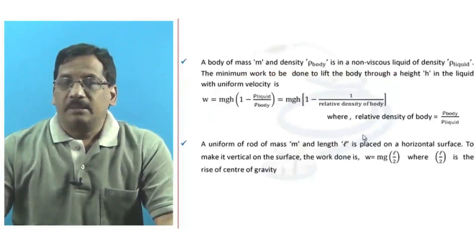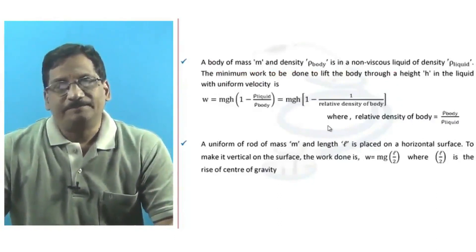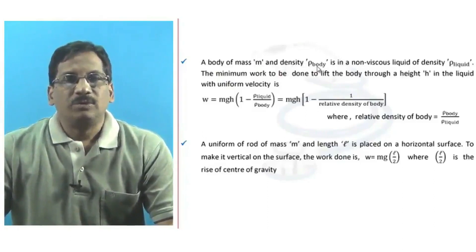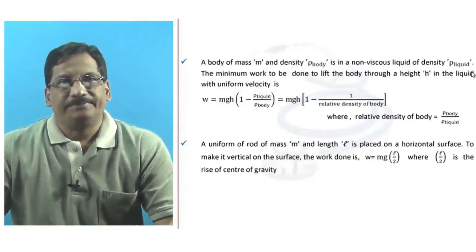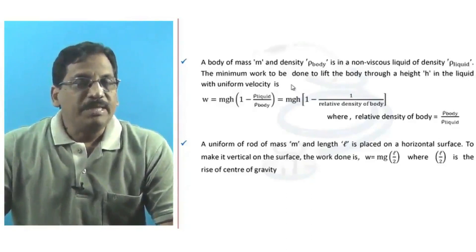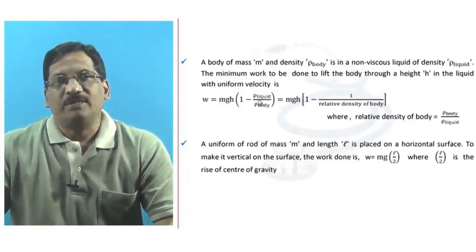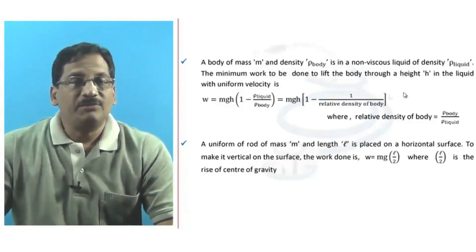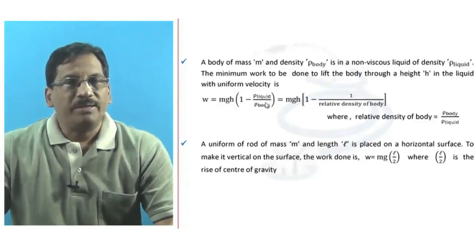Let's look at various formulae useful in solving numericals for calculation of work done. Suppose a body of mass M and density rho-body is in a non-viscous liquid of density rho-liquid. The minimum work to be done to lift the body through a height h in the liquid with uniform velocity is W = Mgh × (1 − rho-liquid / rho-body).